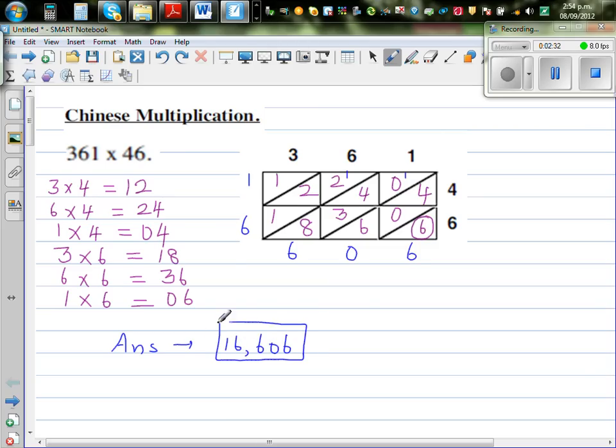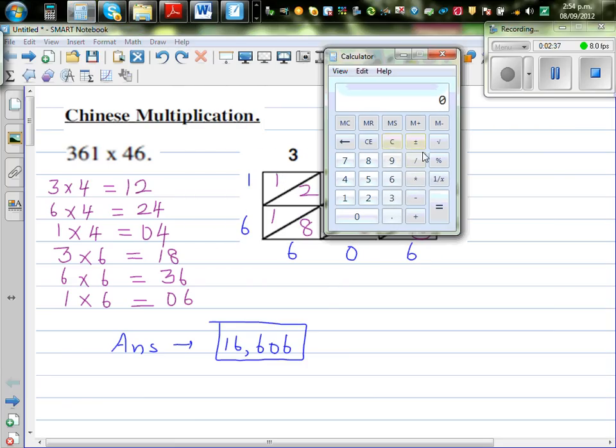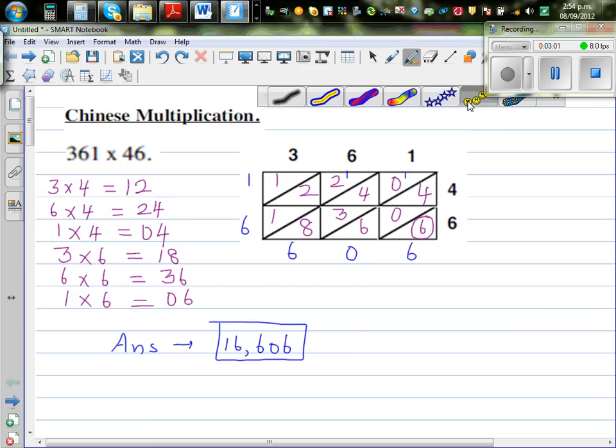Let's check by putting this in the calculator. This is my simple Microsoft calculator. So this is 361 times 46 equals 16,606. So your answer is right. So you can give yourself two smiley faces.